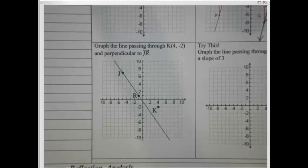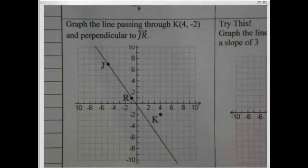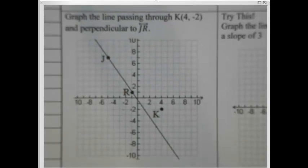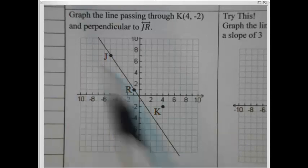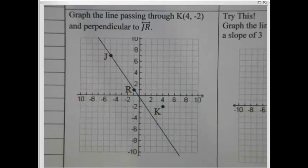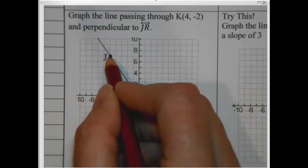Alright. Next example, we are going to do a perpendicular one. And I'm going to zoom in on this one. Okay. We're going to graph the line passing through the point 4, negative 2. And perpendicular to JR. So like our last example, we have to figure out what's the slope of JR.